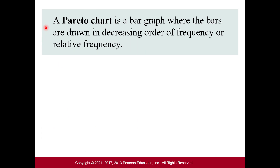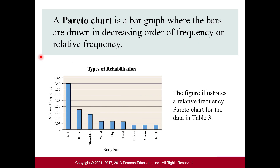Next, let's talk about a Pareto chart. A Pareto chart is just a bar graph where the bars are drawn in decreasing order of frequency or relative frequency — nothing new, just a matter of how you label the category axis. Here is a relative frequency Pareto chart for our data: we start with the highest frequency, which was back, then the next highest, and so on.